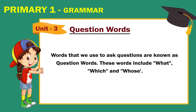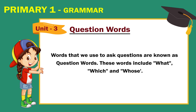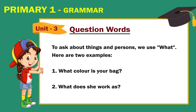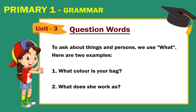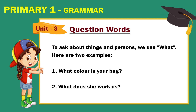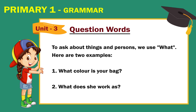These words include what, which, and whose. To ask about things and persons, we use what. Here are two examples: 1. What color is your bag? 2. What does she work as?